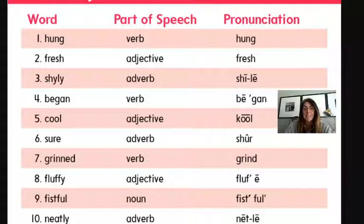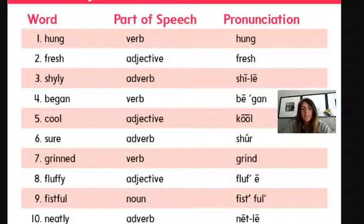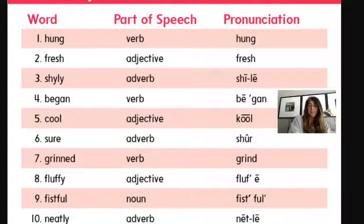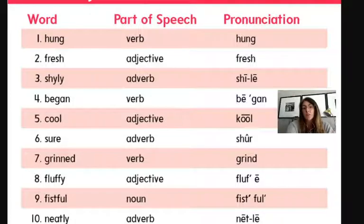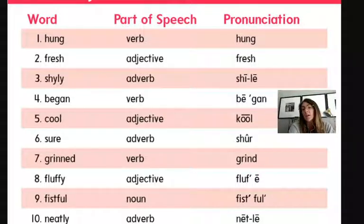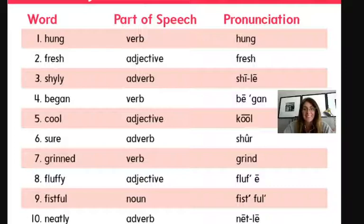Number three is shyly. The part of speech is an adverb. By adding L-Y, it makes it an adverb to tell how an action is done. For example: I shyly handed in my test because I didn't think I did well. If you look at the pronunciation column, the long I is shown with a straight line across, and L-E tells us it's a long E. Shy-ly.